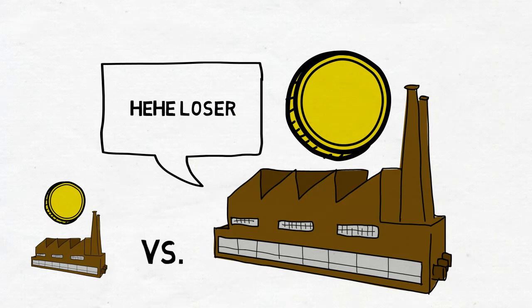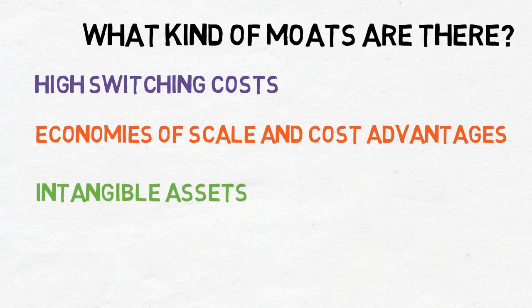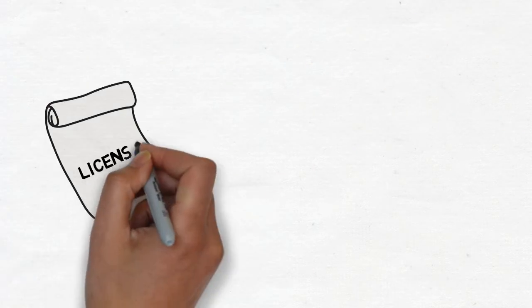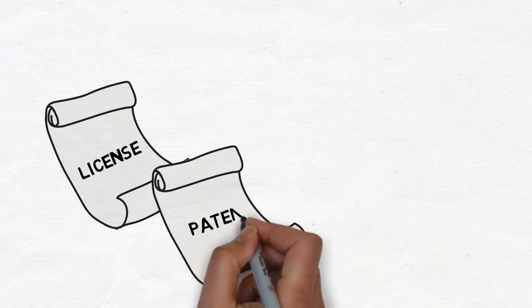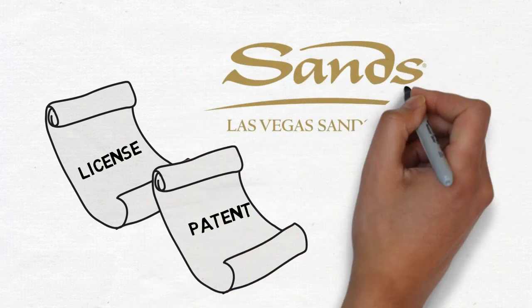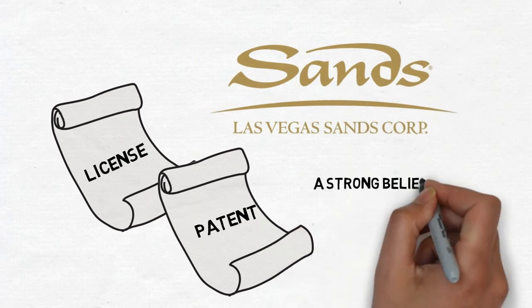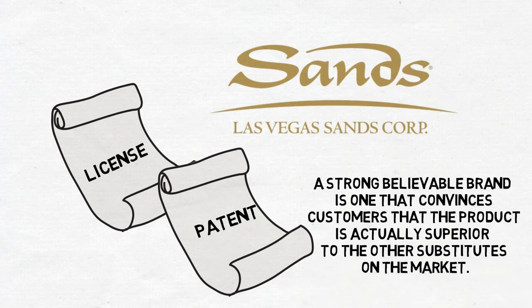The third common type of moat is intangible assets. Remember when we covered what assets were on the other video and we got to intangible assets on the balance sheet? Well, it's intangible assets again. So intangible assets are the licenses and patents as well as the branding that supports the company. Patents block others from selling the same product, is a very common moat in the pharmaceutical industry. And we saw how important licenses were when we looked at Las Vegas Sands for September's stock of the month. Branding works a little differently as it aims to prevent customers from thinking that two products are comparable. A strong, believable brand is one that convinces customers that the product is actually superior to the other substitutes on the market.